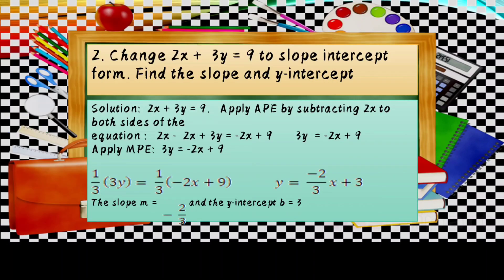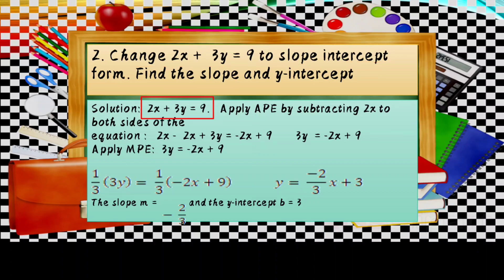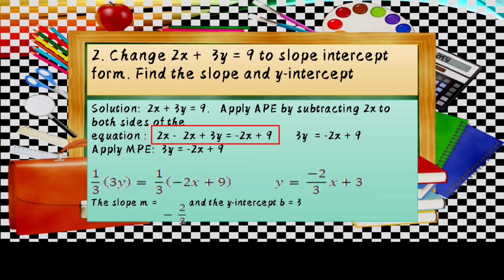Example number two: change 2X plus 3Y equals 9 to slope-intercept form and find the slope and the Y-intercept. Apply the Addition Property of Equality by subtracting 2X from both sides: 2X minus 2X plus 3Y equals negative 2X plus 9. Since 2X minus 2X is zero, we get 3Y equals negative 2X plus 9.